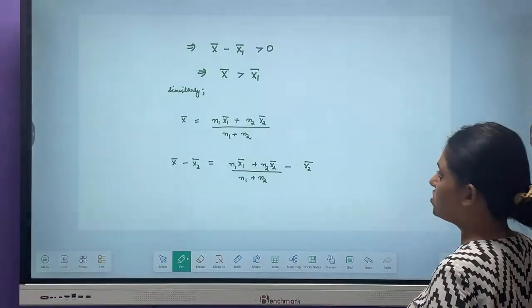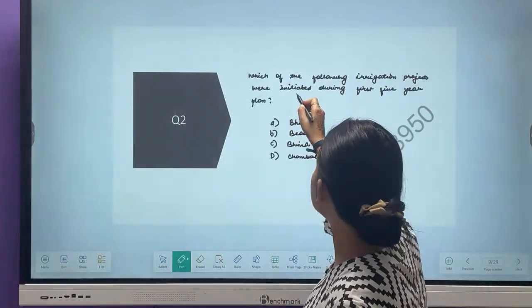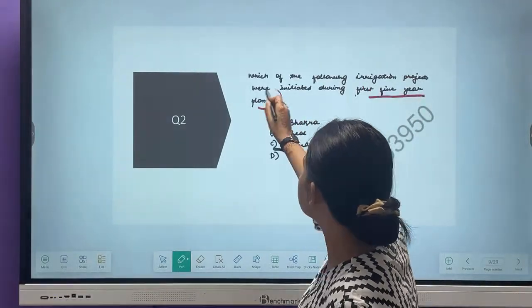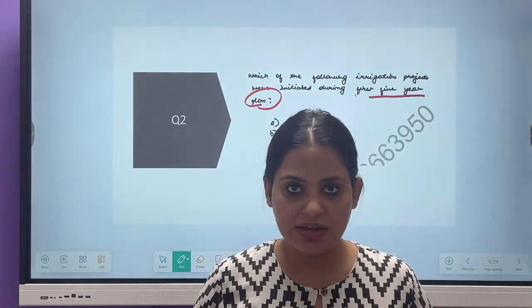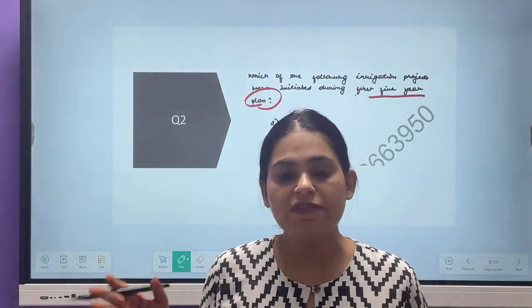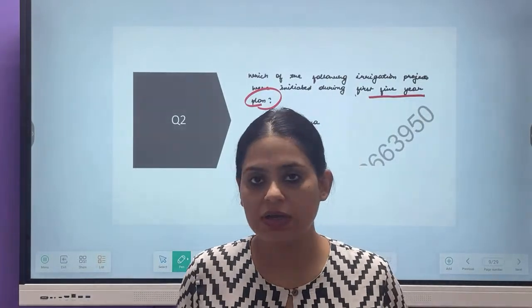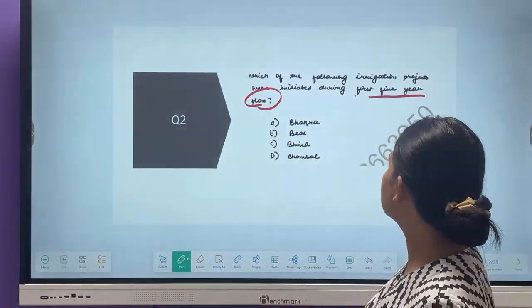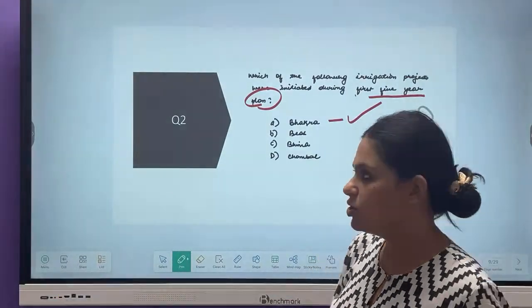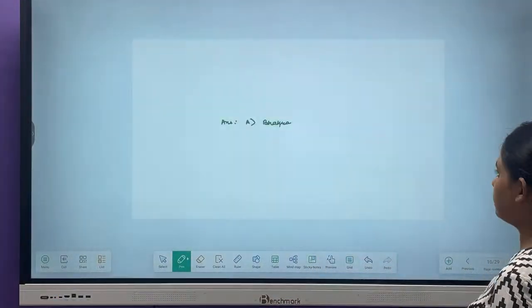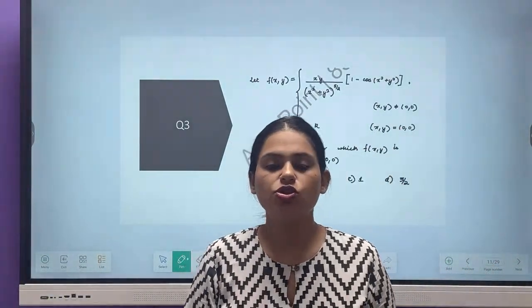Next question: Which of the following irrigation projects were initiated during the first five year plans? Questions like this can definitely come in your final IIT paper. Five year plans related information you should know all of it. Which irrigation project was initiated? The correct answer is A.